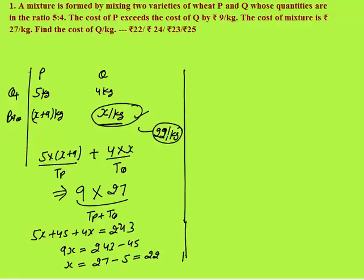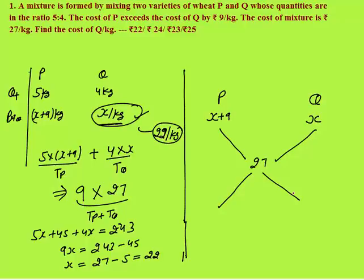Now this is the average equation way. The same you can apply using allegation. In allegation, first you need to write on the top which two things you are going to mix — we are mixing P and Q. The price of P is X plus 9, the price of Q is X. The average price we know is 27. You have to subtract diagonally — smaller value from the larger value. By common sense, X plus 9 is greater than X, and 27 is the middle value, so this value will be smaller than X plus 9.